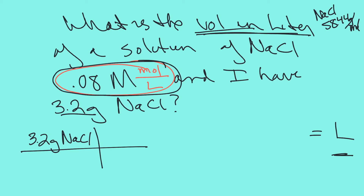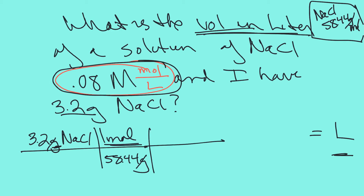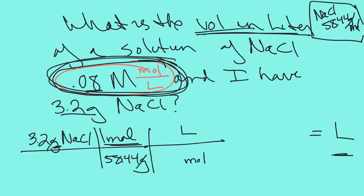I can use the molar mass: 58.44 grams per mole — grams cancel, now I'm in moles. Now I can use my molarity, but I want moles on the bottom, so I flip my molarity — the number stays with the mole: 0.08 moles in one liter. Moles cancel, I'm at liters. Done. So: 3.2 ÷ 58.44 ÷ 0.08 = 0.68 liters.